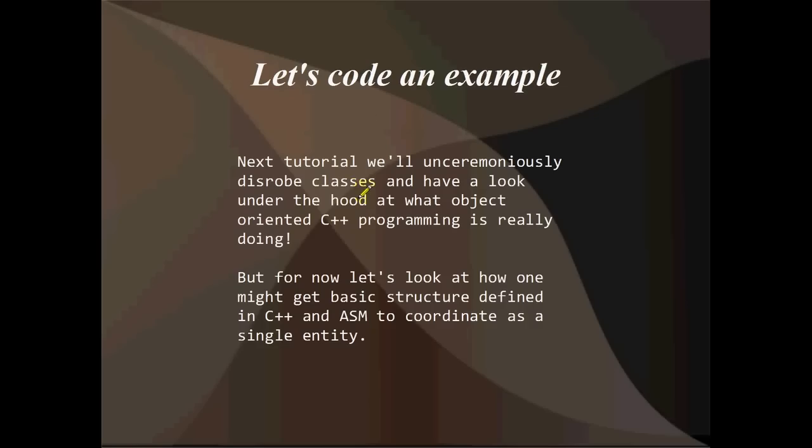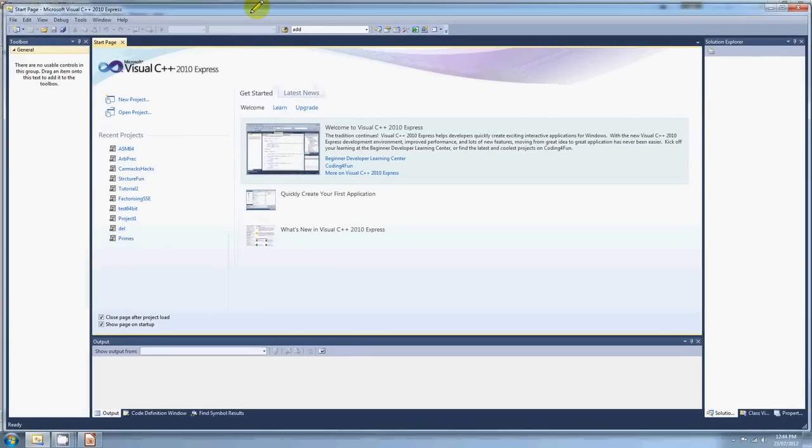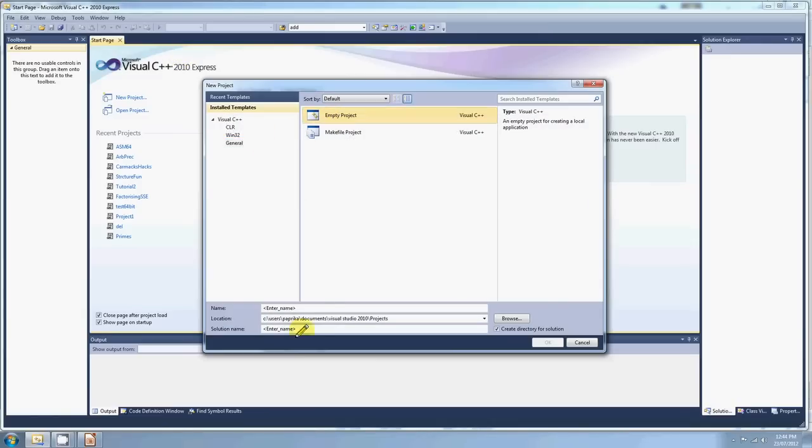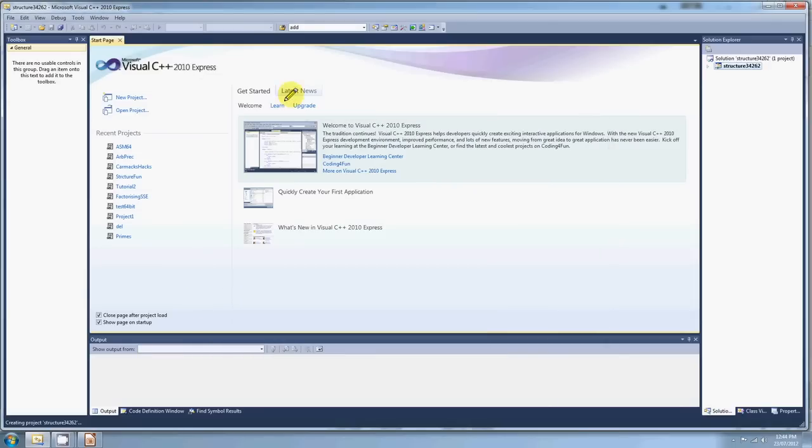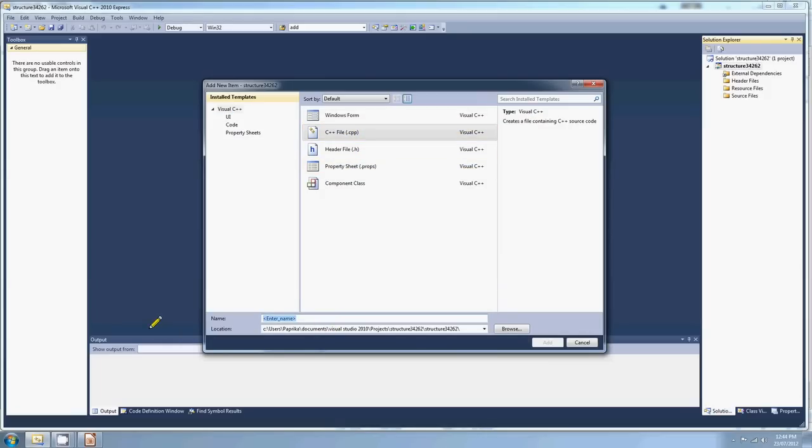Anyway. Okay, so let's code an example. Next tutorial we're going to unceremoniously disrobe classes and have a look under the hood at exactly what object-oriented C++ programming is really doing. But for now, we've got a little example to code up on the stuff that we just went through. So I'm just going to make a basic little structure in C++ and assembly and use an include file and see if we can get them all to play along. I'm going to call this structure and then I'm going to type a number after it because I'm not sure how many of these I've made. The first thing that we'll do is add our C++ file. This is just going to calculate the distance between a couple of Point structures. Pretty basic stuff really, but I think it's going to be a good example.